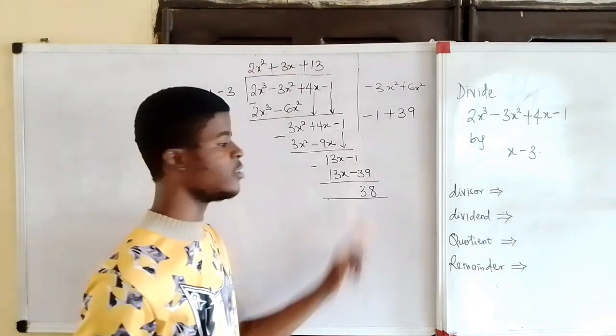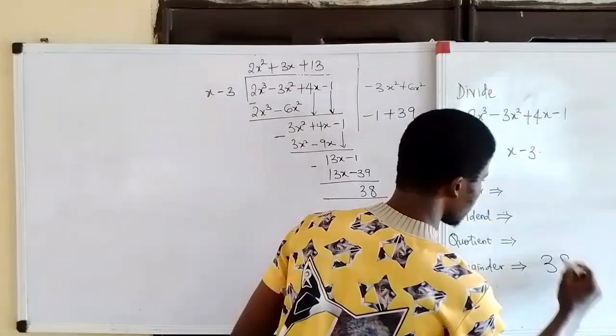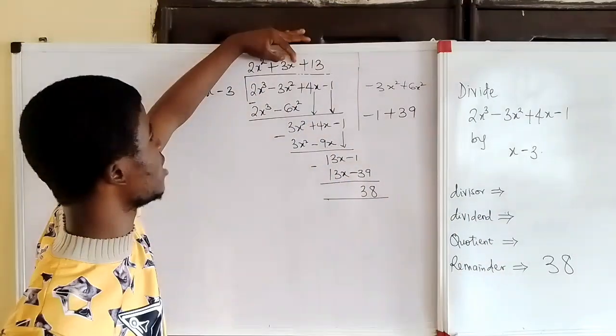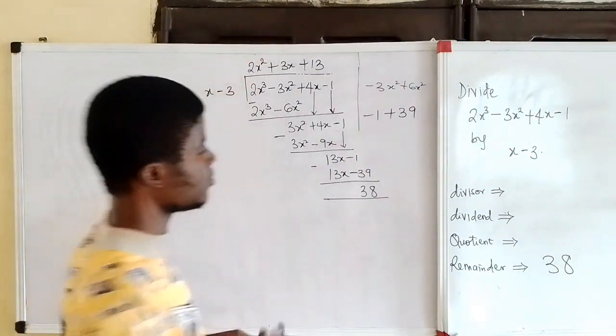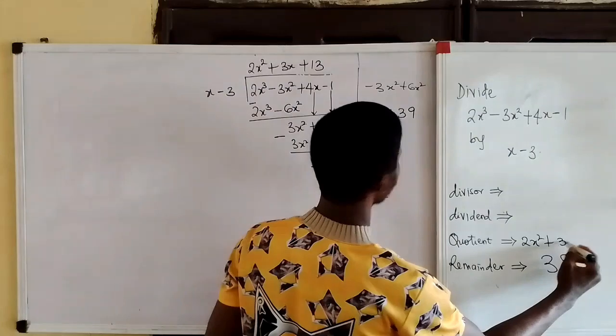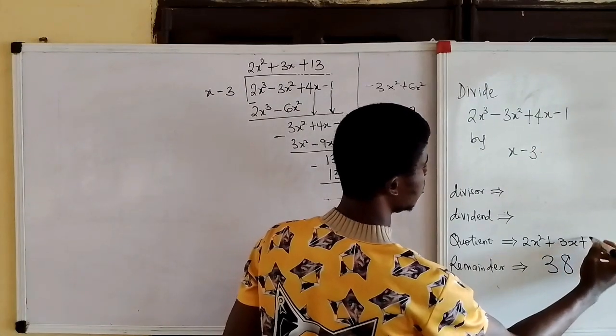The remainder is 38. The quotient is this expression that is here: 2x squared plus 3x plus 13. This is the dividend.